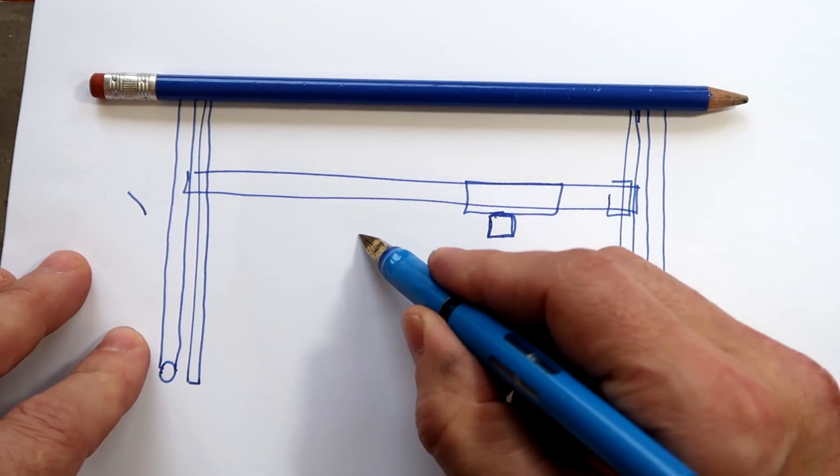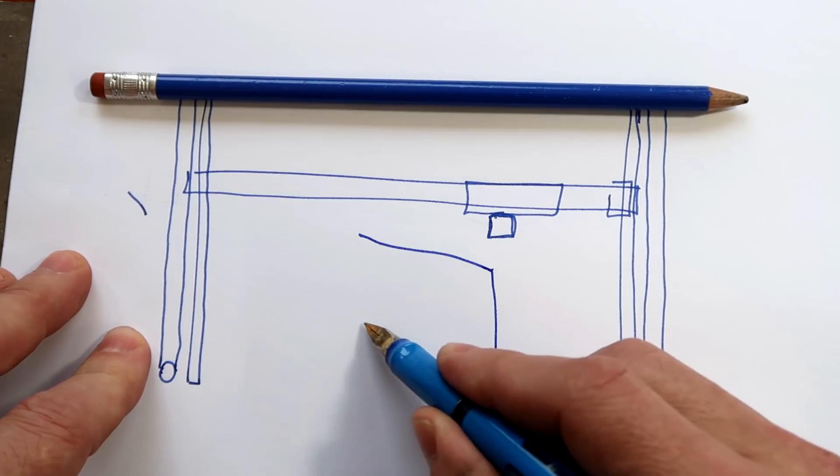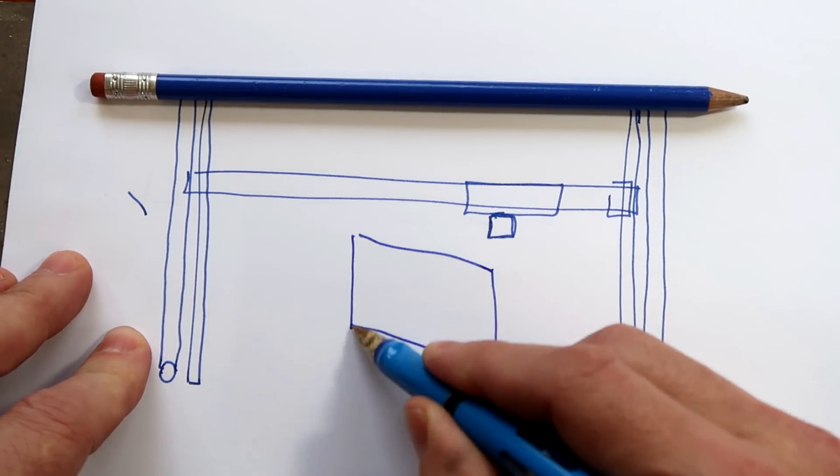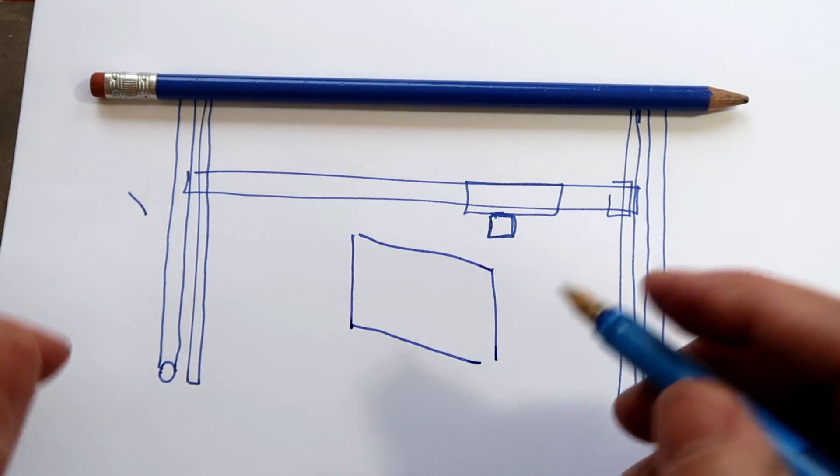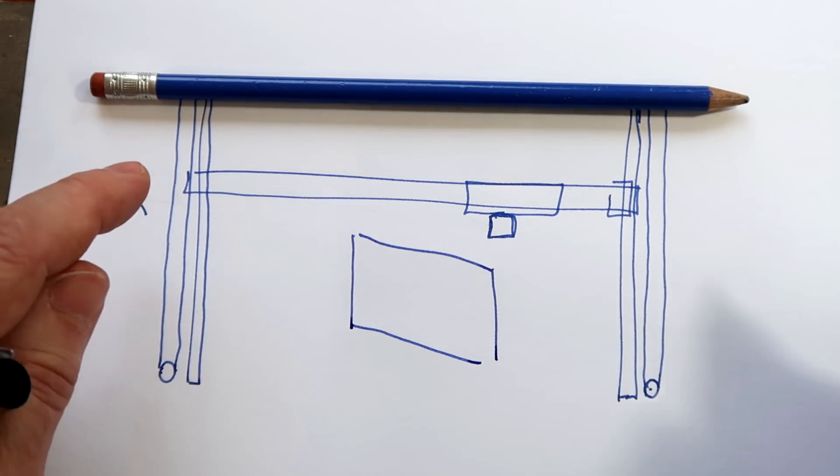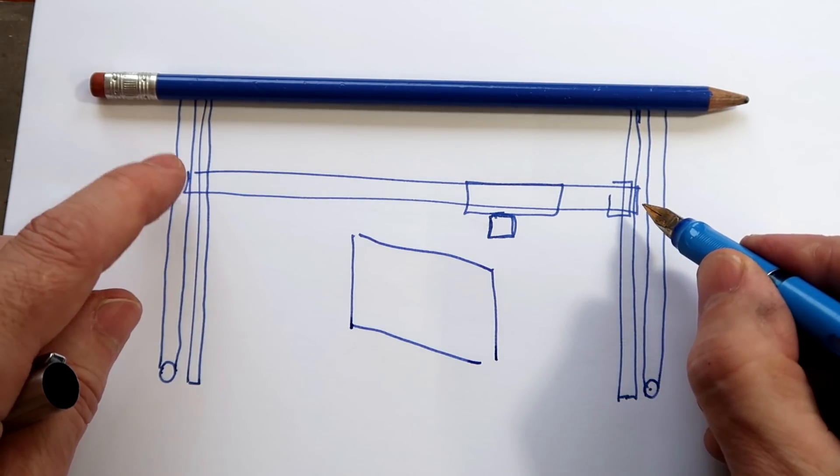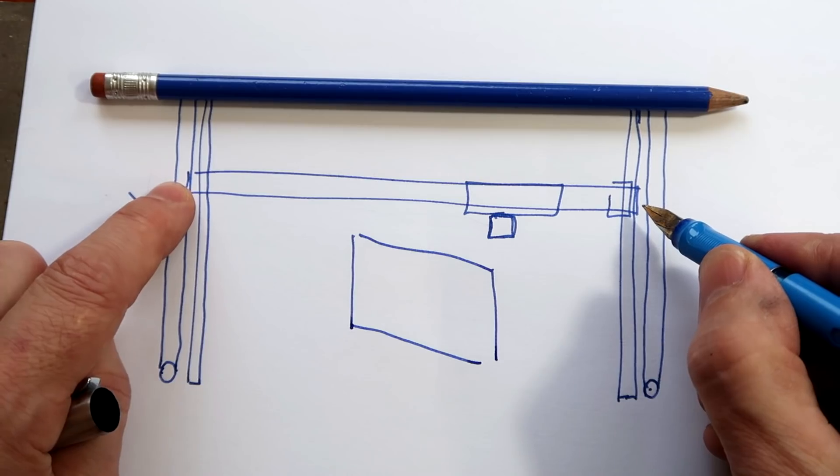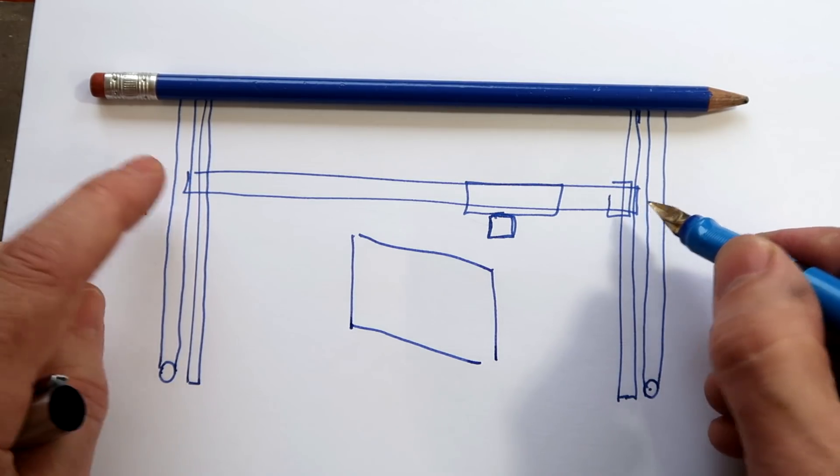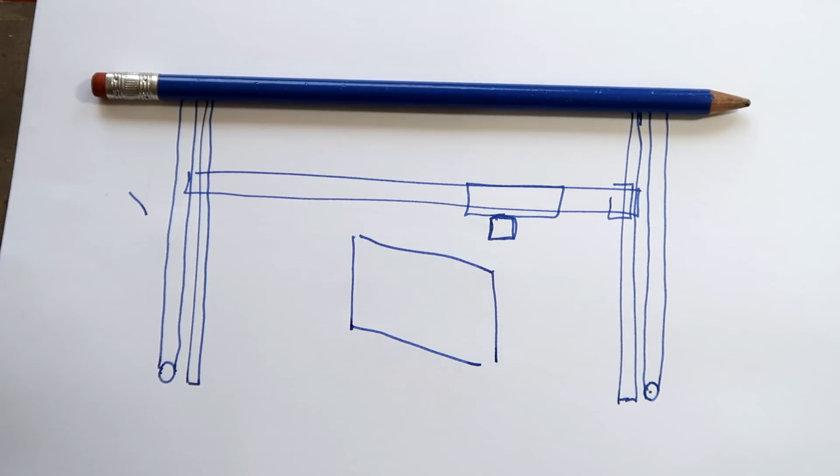So instead of cutting a square, you end up cutting something that looks a little bit like this. Again, way exaggerated. The problem that I had seen, I think this side and this side were out of line by maybe a millimeter, maybe two. So just looking at it, you really couldn't see a problem.